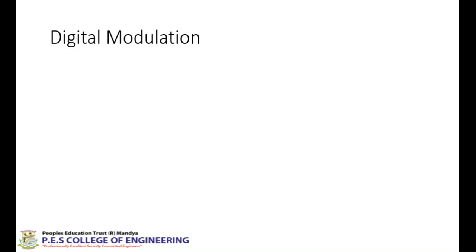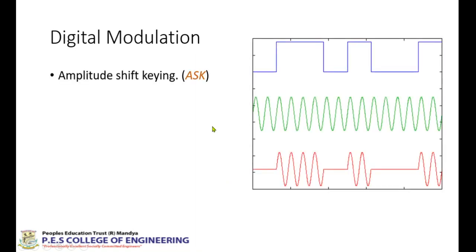Digital modulation, on the other hand, is where your message will be in digital form — basically ones and zeros, or bits. Similar to analog modulation, we have three types: Amplitude Shift Keying, which is similar to amplitude modulation; Frequency Shift Keying, similar to frequency modulation; and Phase Shift Keying, similar to phase modulation.